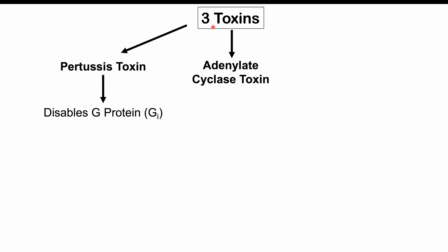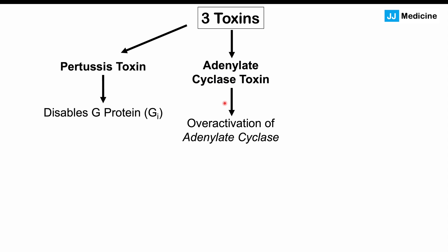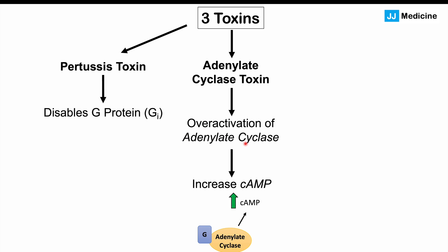The bacteria also produces adenylate cyclase toxin, which overactivates adenylate cyclase. Adenylate cyclase is responsible for producing cyclic AMP, an important second messenger in the cell. The pertussis toxin disables the Gi protein, which normally inhibits adenylate cyclase — so by inhibiting the inhibitor, we get more activation of adenylate cyclase, leading to increased cyclic AMP, which suppresses the functioning of respiratory immune cells so the bacteria can grow and multiply even more.